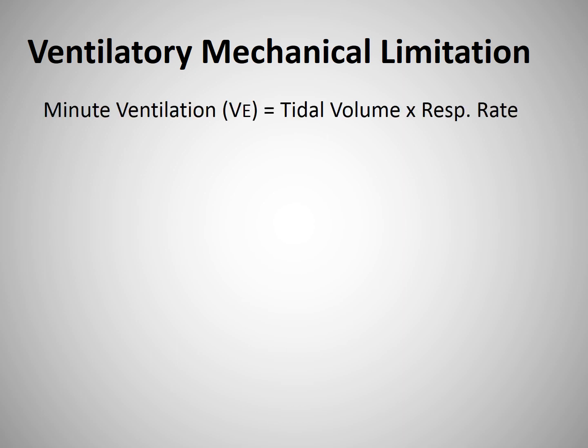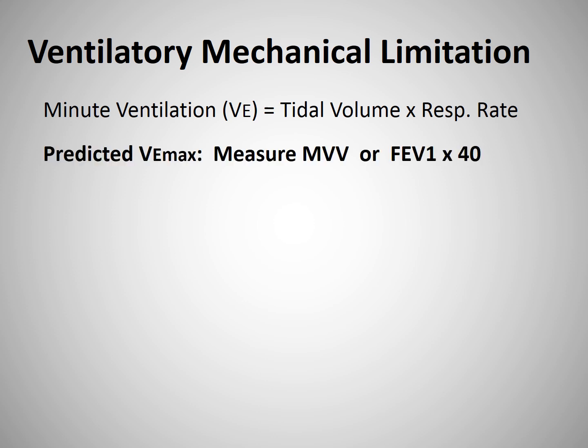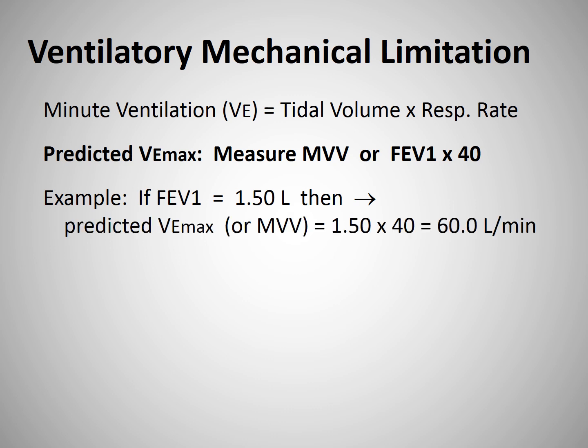A ventilatory mechanical limitation means the patient has reached the limits of their maximum ability to increase their minute ventilation. Calculating a subject's minute ventilation is simply the product of the tidal volume times the respiratory rate. A subject's predicted minute ventilation can be determined by having the patient perform an MVV maneuver during spirometry, or it can be calculated by multiplying the subject's FEV1 times 40. For example, if a patient has an FEV1 of only 1.5 liters, then their predicted MVV, or ventilatory limit, can be calculated by multiplying their FEV1 of 1.5 liters times 40, which gives a maximum predicted minute ventilation of 60 liters.